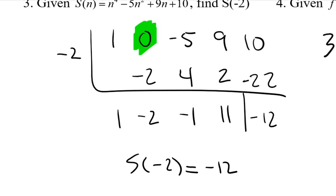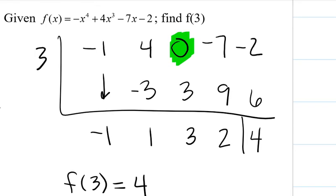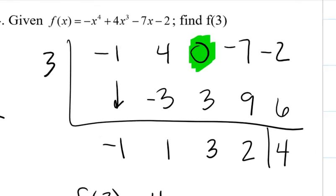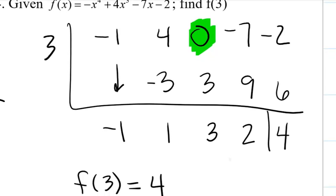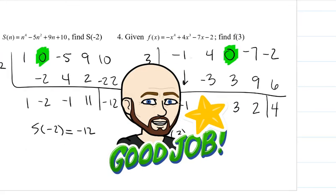And then sliding over to example 4, same thing again. We have a 0 in there for the term because if you look at all the terms from negative x to the 4th all the way down to our constant of negative 2, we are missing a squared term. So in that space, we've got to put a 0, in which case we will end up with a value of 4. So f of 3 is 4. So give yourself a pat on the back for getting all those 4 correct.